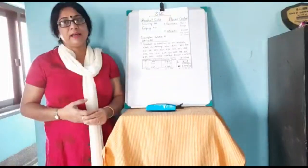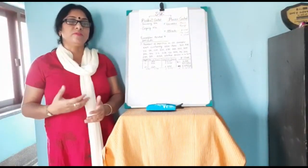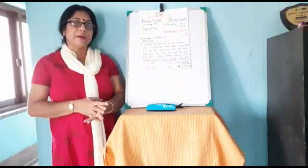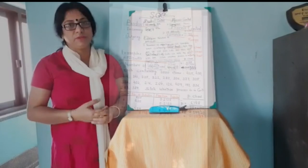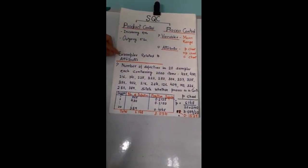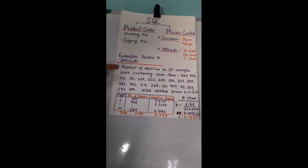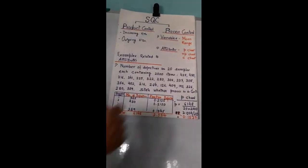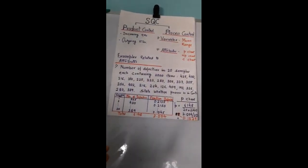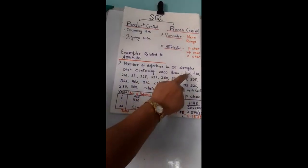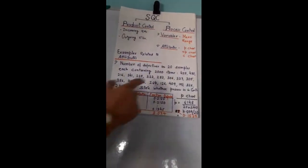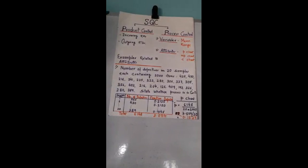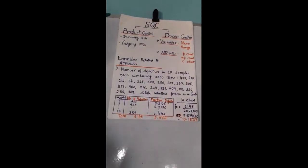After my second class, I got a few questions on how to solve or give some examples on p chart and NP chart. So today we will be discussing a few examples on p chart, NP chart, c chart, and then I will proceed further. This is an example related to attributes. Suppose the number of defectives in 20 samples each containing 2000 items are given. We have to state whether the process is in control or not.